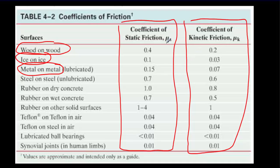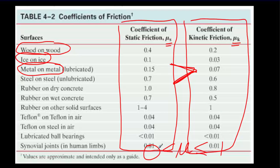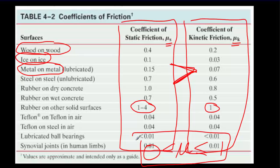You'll notice that the values for static friction coefficients are larger than those for kinetic friction. You'll also notice that for pretty much every entry, the coefficient is less than or equal to 1. The only common case where the coefficient of kinetic friction equals 1 is rubber on something like cement, where the coefficient of static friction can actually be quite a bit larger than 1. But by and large, all the coefficients are less than 1.